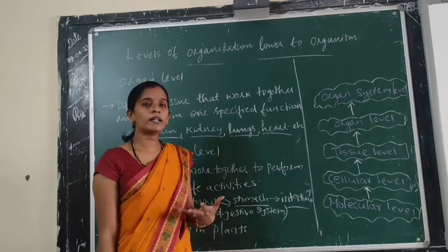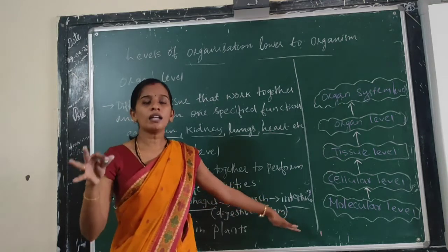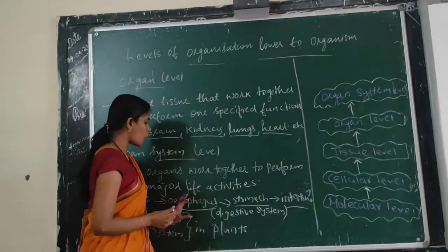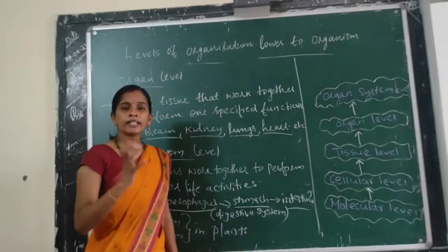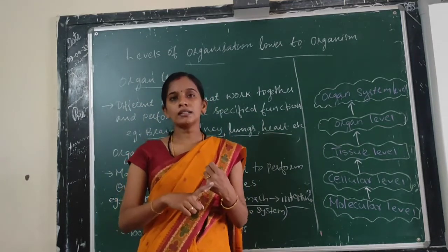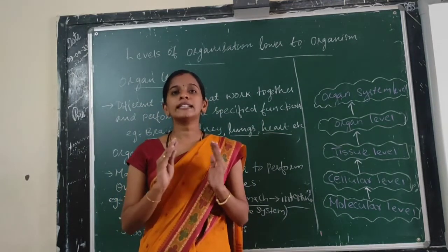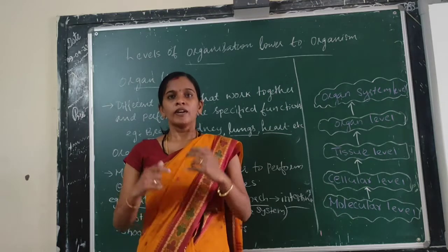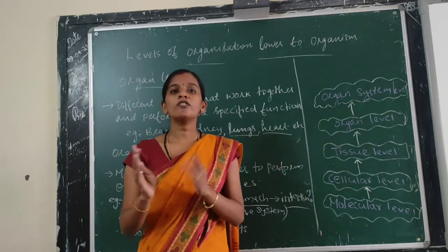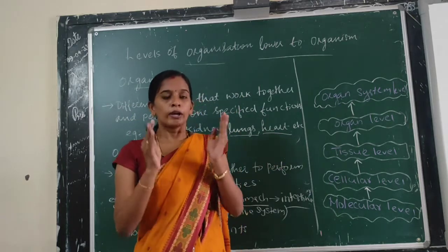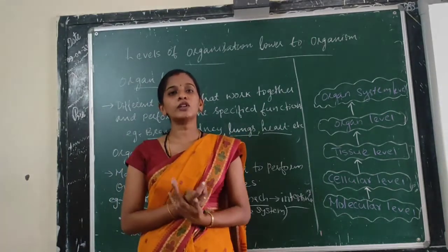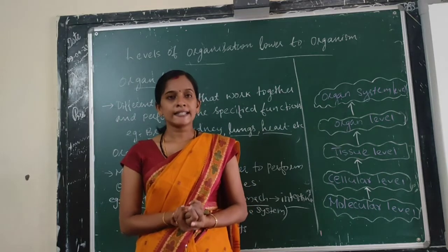When discussing the circulatory system, the heart and blood vessels are all involved. When we discuss the kidney and various tubules, they are involved in the excretory system. So we can say that many organs work together to form an organ system.